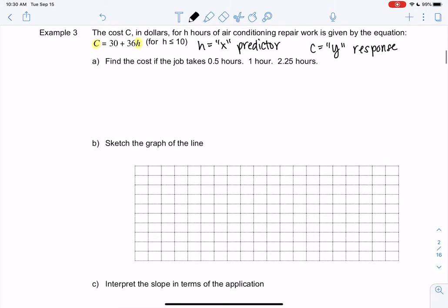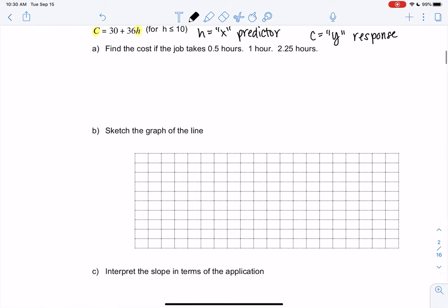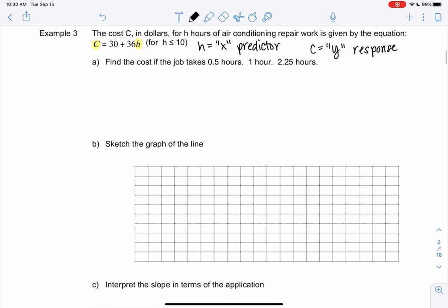So let's go ahead and find the cost for these three cases. I'm going to set it up in a table so that we're ready to graph in a second. So I always do x, y. So in this case, we will do h and cost. So we want to find the cost for a half hour, 0.5. We want to find the cost for an hour. We want to find the cost for 2.25 hours.